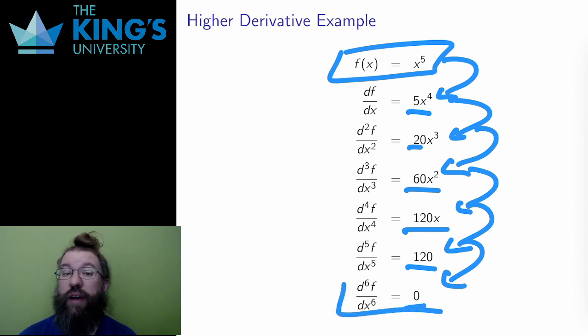For any polynomial, if I do enough derivatives, I eventually get to 0, since each derivative drops the degree by 1.